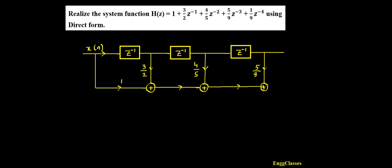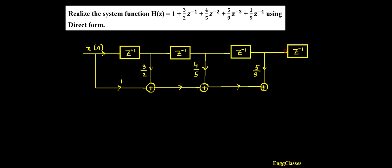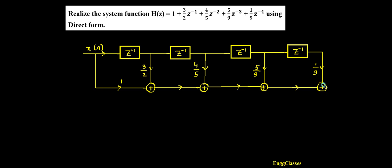Simply moving on further I need 1/9 z⁻⁴. So I have to get another delay element — let me get the delay element here. That gets multiplied with 1/9. So let me take this line till this point and extend it. That needs to be added with the previous signal, scaled by 1/9. Finally I should add that with the previous signal, hence I would have an adder here. And the last thing is to get the output y(n), so here I am going to get the output y(n).